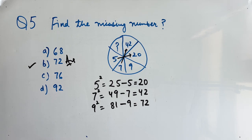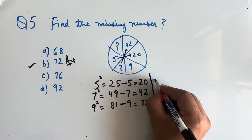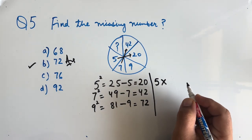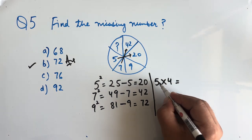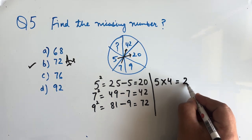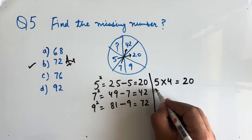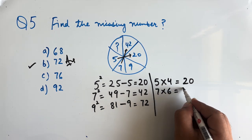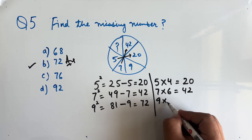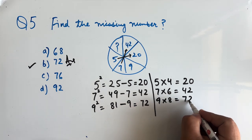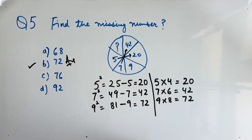We can apply another logic also: if we subtract 1 from 5 we get 4, and 5 into 4 is 20. In the similar way, 7 into 6 is 42, so 9 into 8 will be 72. You can apply either logic.